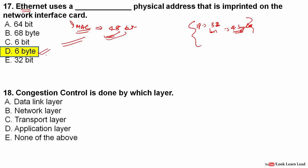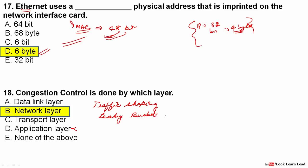Congestion control is done by which layer? The answer is the network layer. Methods for congestion control include traffic shaping, the leaky bucket algorithm or token bucket algorithm, and choke packets — by sending choke packets into the network you can detect and control congestion. So congestion control is performed at the network layer.